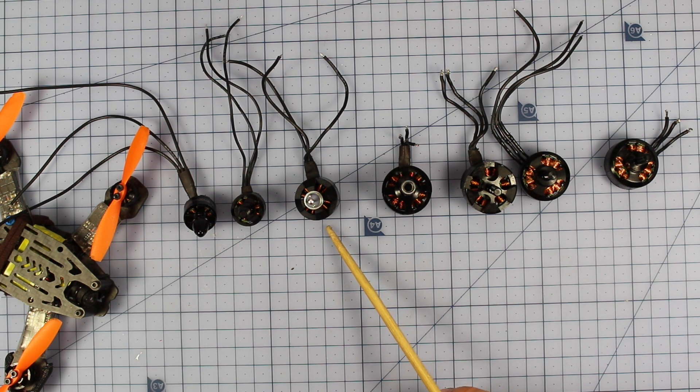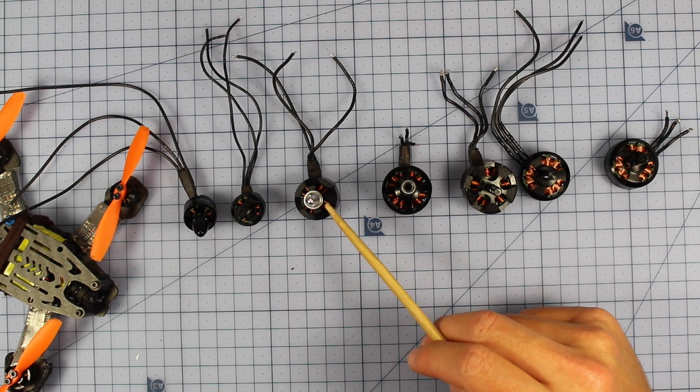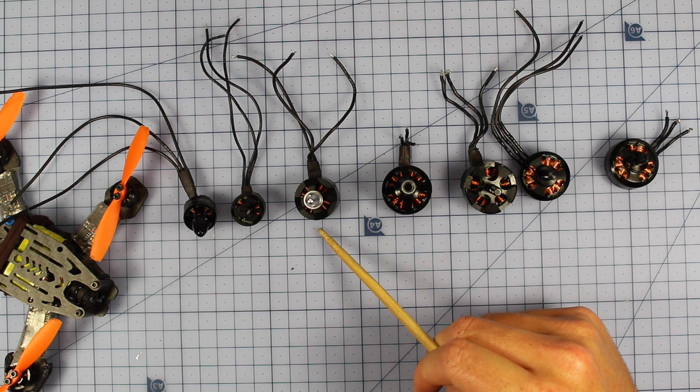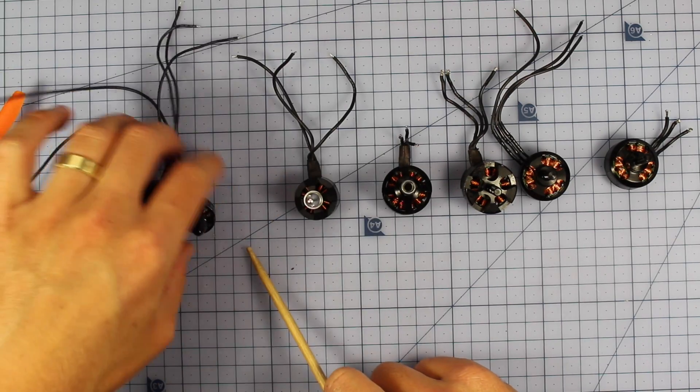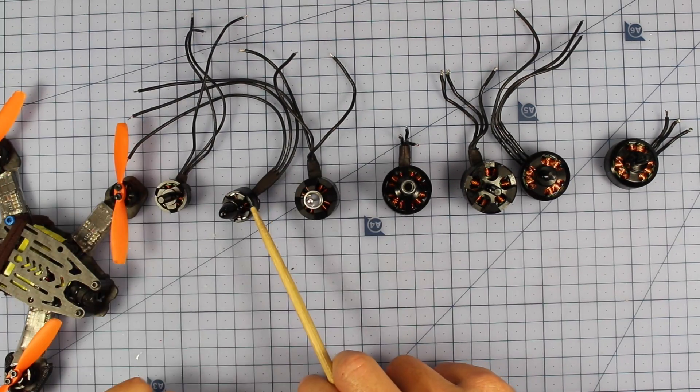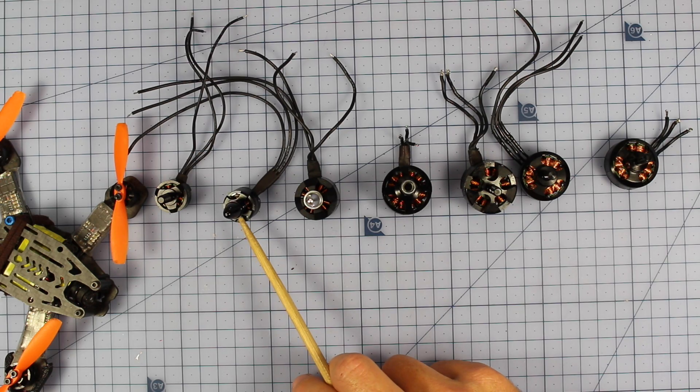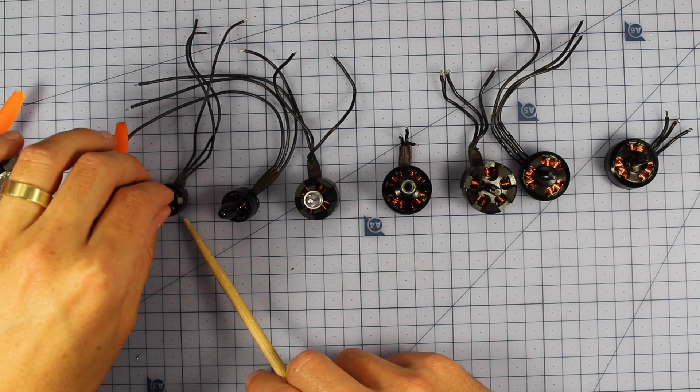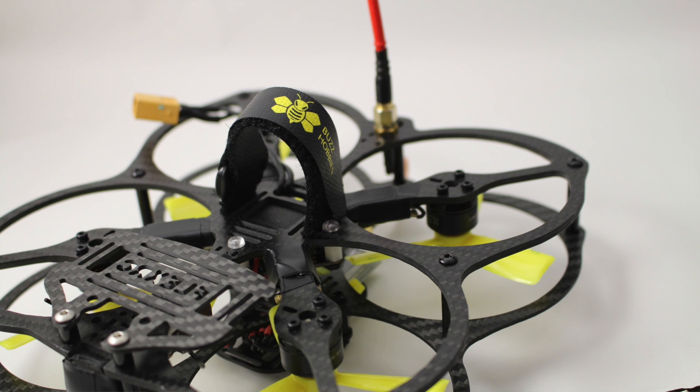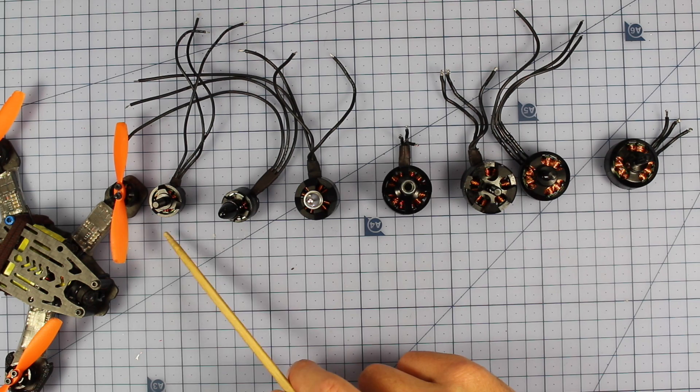Moving down the line to a bit smaller motor, we've got an 1806 2700KV, and I would say this is best for a four inch bullnose prop. That's probably what I think is the perfect motor for that, and that's going to be great for your 180 size quads. Going down the line even further still, I've got the 1306 3100KV motor, and that's going to be best for your tapered four inch props or some bullnose three inch props. Moving down the line again, I've got a 1306 4000KV motor, and that's going to be best for your three inch props or your three inch bullnose props.